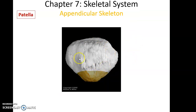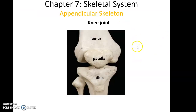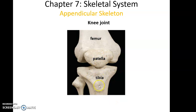Then we have the patella, or kneecap bone. It's a rather triangular shape and part of the knee. The knee joint is formed by the femur with its lateral and medial condyles, the patella, and the tibia — those are the three bones that help to form the knee joint.